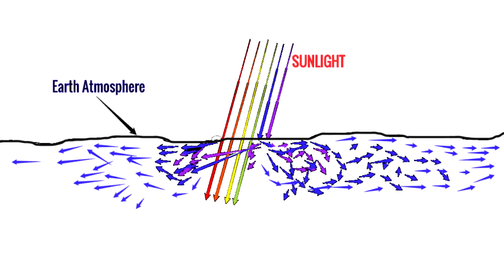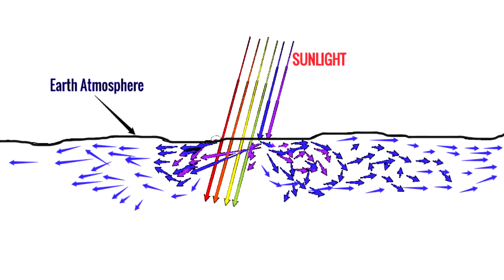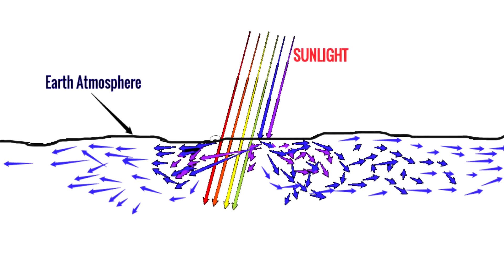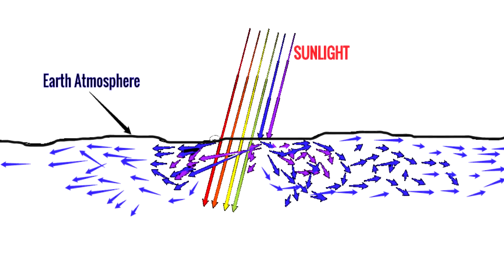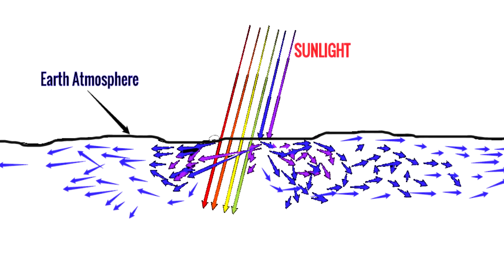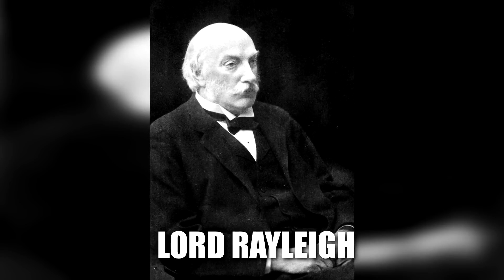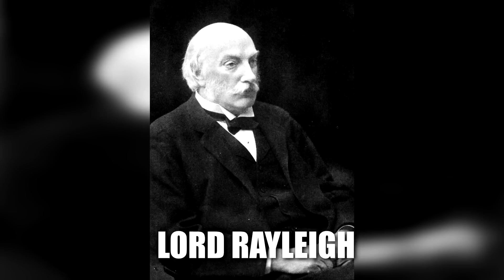When sunlight enters the atmosphere, the low wavelength light on the blue spectrum is scattered by a huge amount of oxygen and nitrogen particles present in the upper atmosphere. This is also known as Rayleigh scattering, named after the physicist Lord Rayleigh.